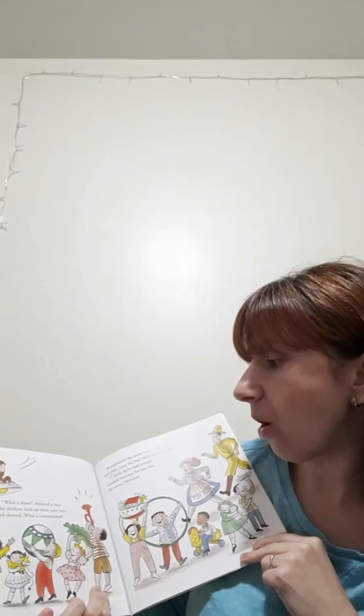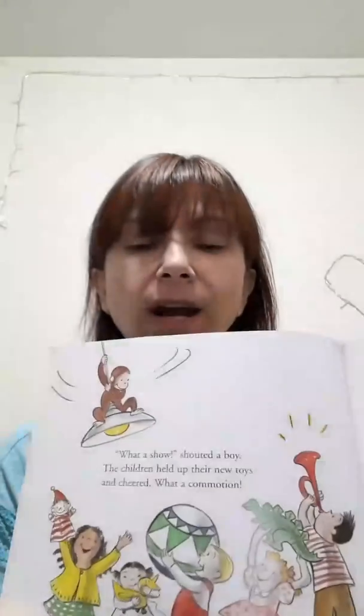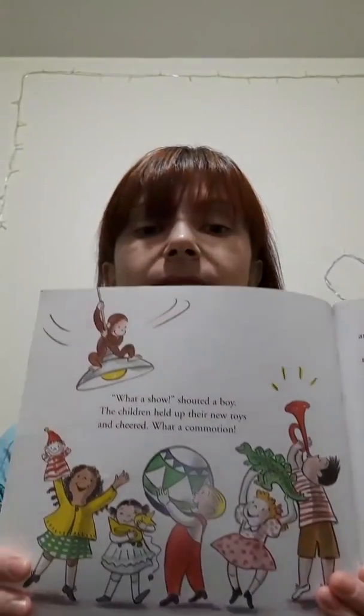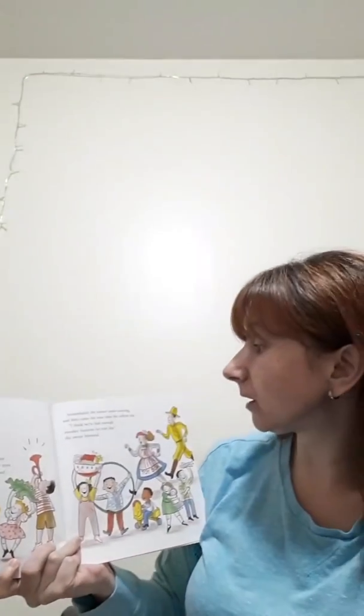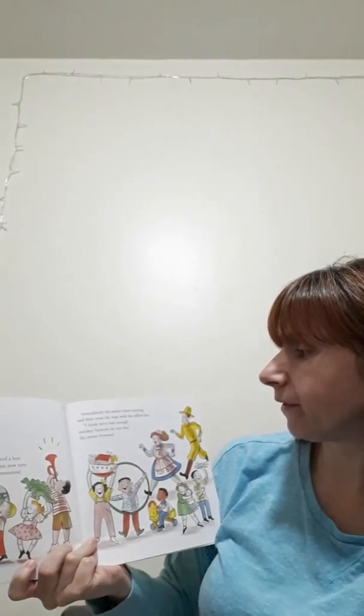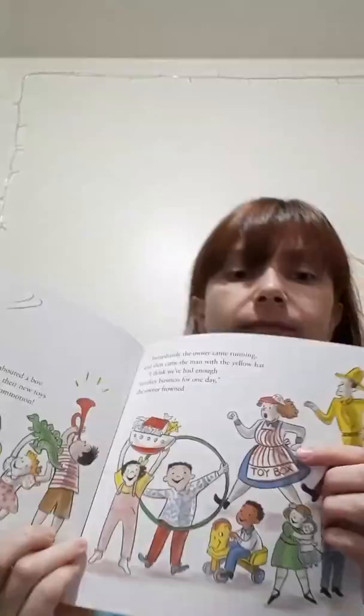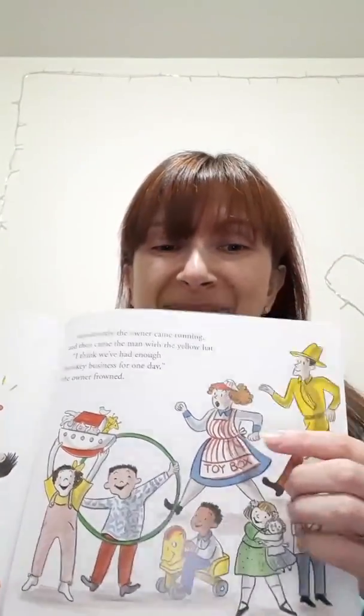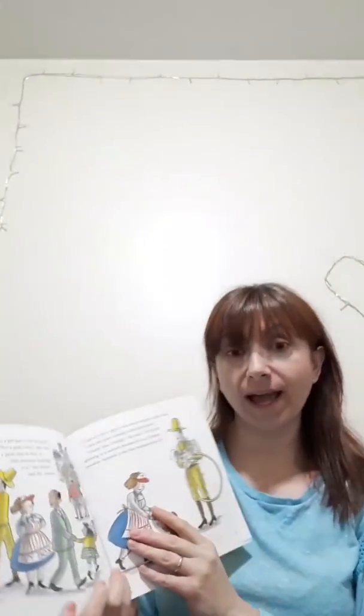Look at this. This is what he did. He jumped, picked, handed in. Great job. What a show, shouted the boy. The children held up their new toys and cheered. What a commotion! Look how happy the kids are. They are very happy. Immediately, the owner came running. And then came the man with the yellow hat.